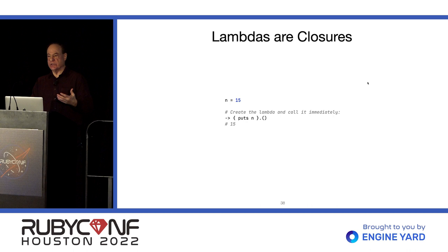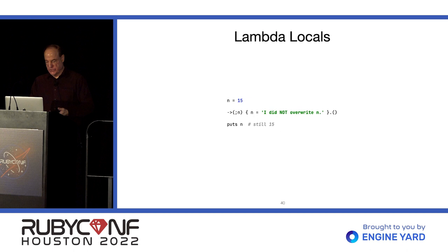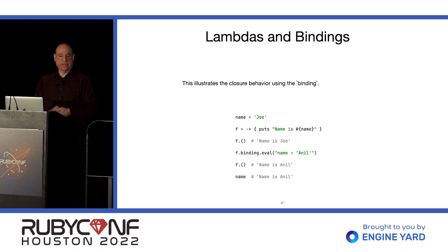Lambdas are closures — they carry with them the context of the scope in which they were defined. So if there's a local variable n which is 15, we can output it inside the Lambda, and we could pass this Lambda somewhere else in the program and it would still work. Fortunately or unfortunately, you could also modify those values — but if that's a problem, you can tell Ruby that you want n to be a local Lambda variable and not use the enclosing scope. You can also call binding on a Lambda and get the binding that contains those local variable definitions.